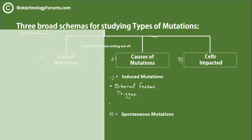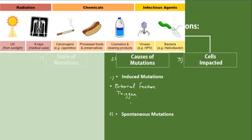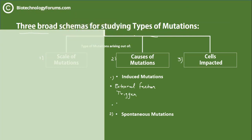So there is always an inducible agent — some external factor that causes such mutations, and we call them induced mutations. To list some of those causes: they include radiation, chemicals, and infectious agents. All these agents are termed mutagens — the mutation-inducing factors.